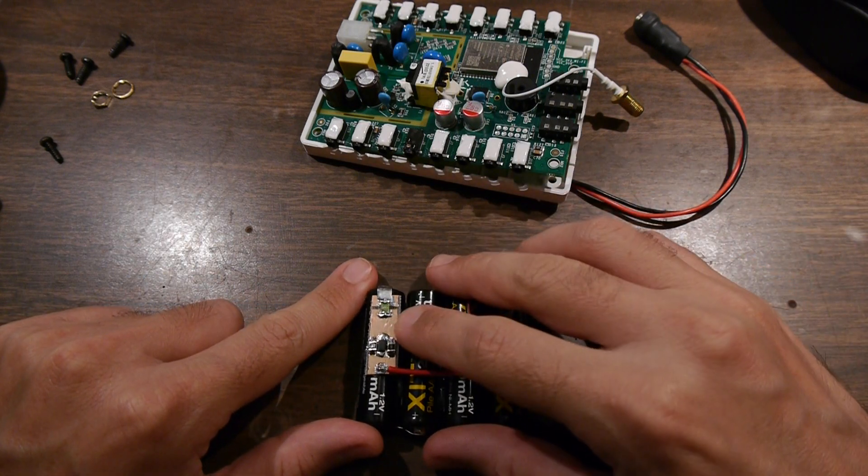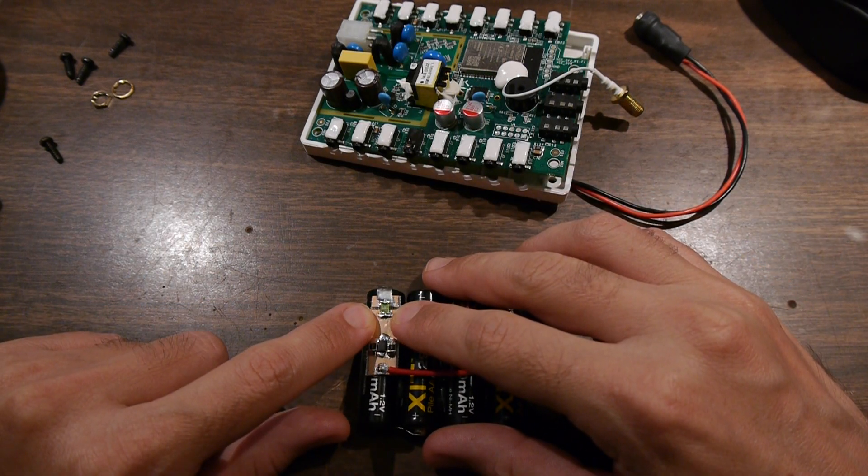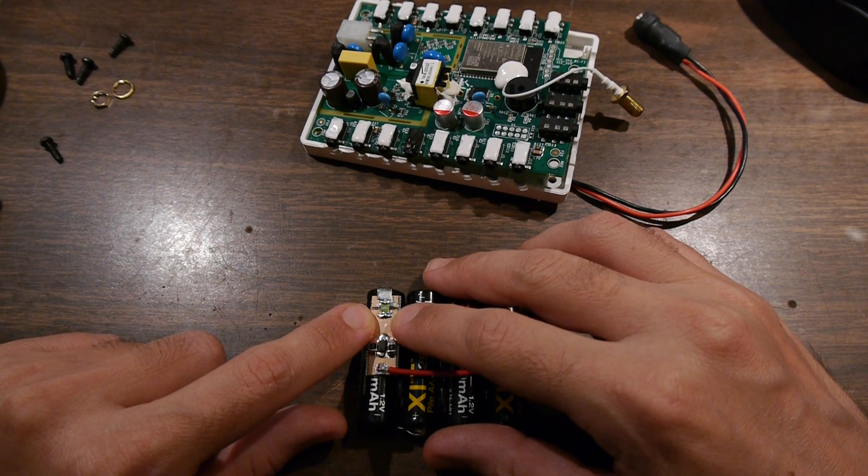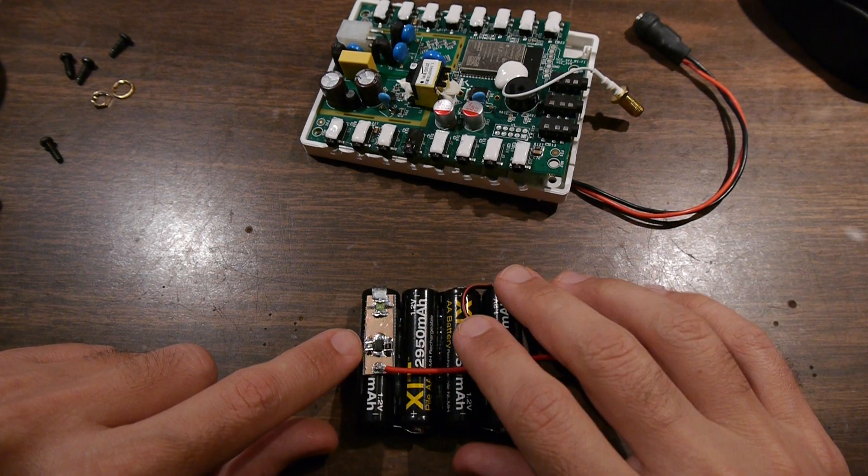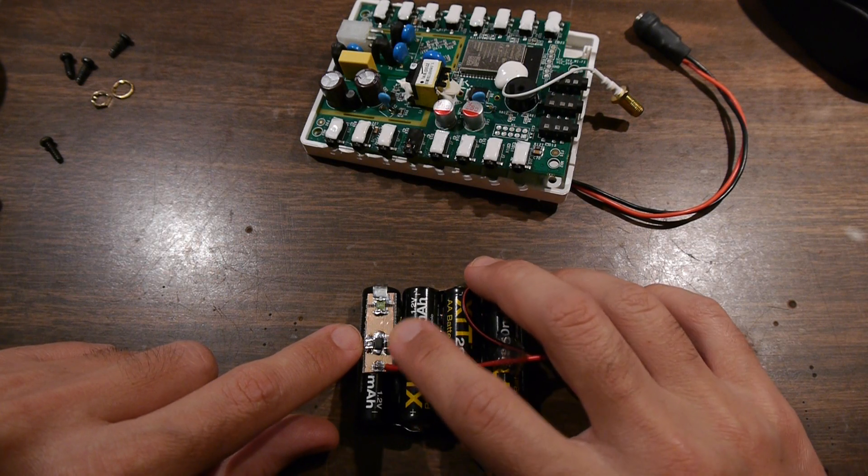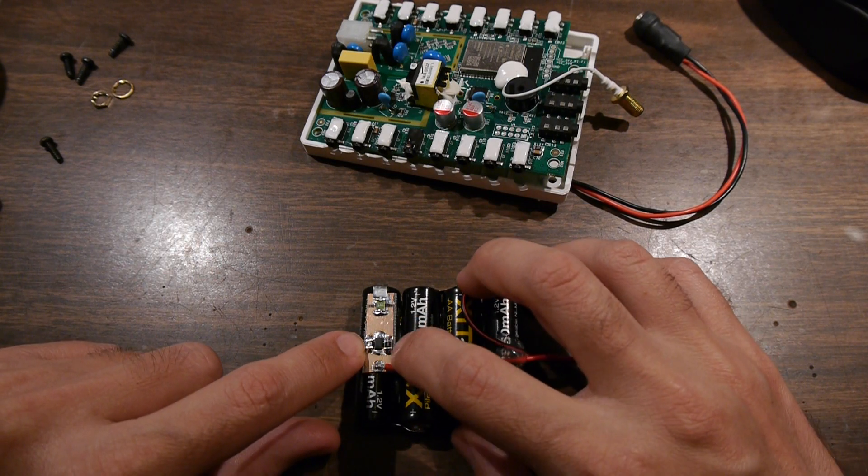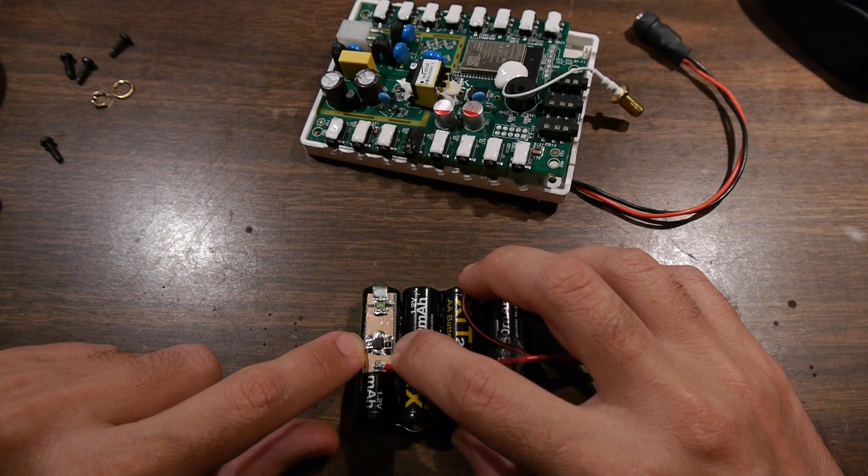I also put in a half-amp resettable fuse just in case. I do want to auto-recharge this battery, but at a controlled rate, so I put in two 40-ohm resistors here. Essentially it's a 20-ohm resistor.